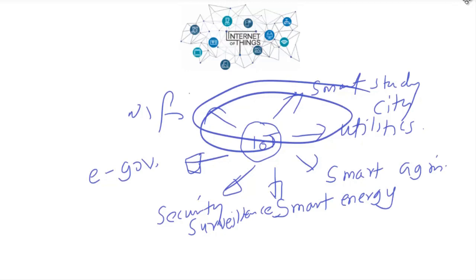The Internet of Things is a technology which enables everything to communicate by themselves over the internet through devices without the use of computers. A most essential and prevalent term in IoT is 'smart', which means automation — the process of decreasing human intervention or involvement, thereby increasing machine intelligence to perform every task by itself.